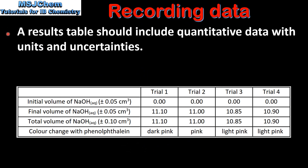Next we look at recording data. A results table should include quantitative data with units and uncertainties. In this results table, which is for an acid-base titration, we have the initial volume of sodium hydroxide, the final volume of sodium hydroxide, and the total volume of sodium hydroxide. In brackets we have the uncertainty quantity together with the unit of measurement.